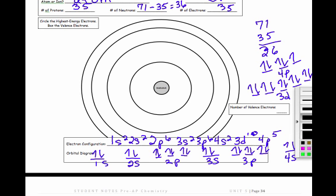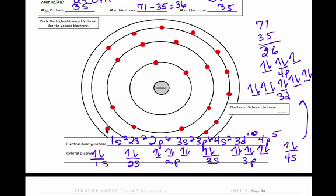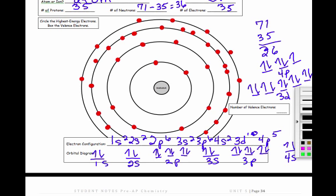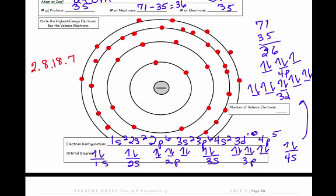Now let's put these electrons in the energy level diagram. 2 in energy level 1. In energy level 2, we have 8. Energy level 3 has 2, plus 6, plus 10, so it has 18 electrons. Then we go out to energy level 4, and it has 2 from the 4s and 5 from the 4p. So the streamlined way of writing this would be we'd have 2, and then we'd have 8, and then we had 18, and then we had 7. So that's how we would do all of these models with bromine.